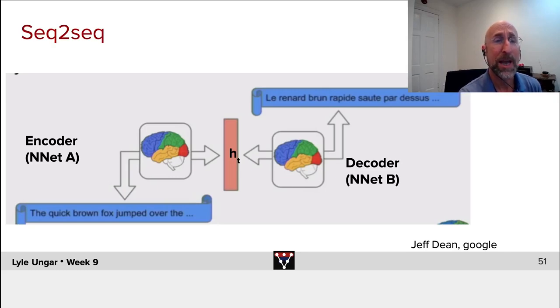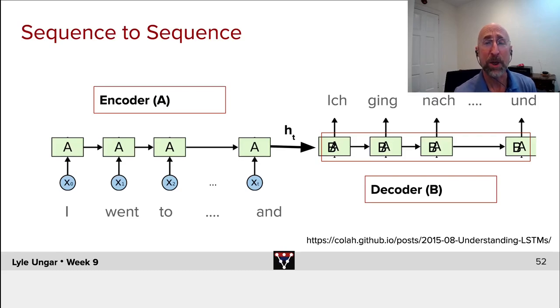So input sequence, output sequence. Drawing this back in the pictures of the form we've been looking at, we have a standard language model. Given each word, predict the next word. At the end of that, there is some hidden state, H of T.